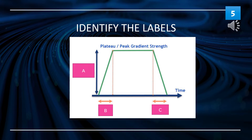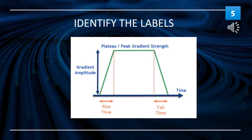Identify the labels in this image. A is the gradient amplitude. B is the rise time. C is the fall time.